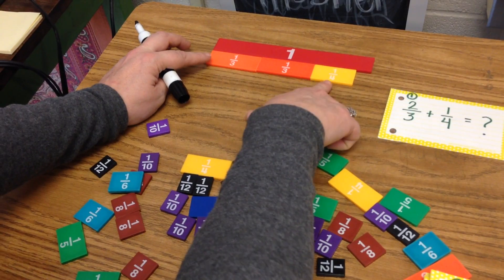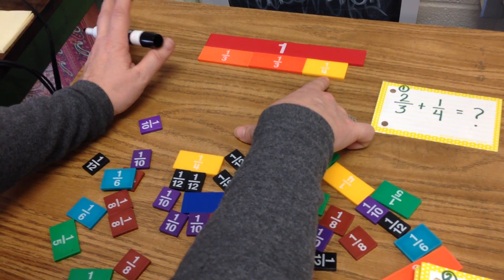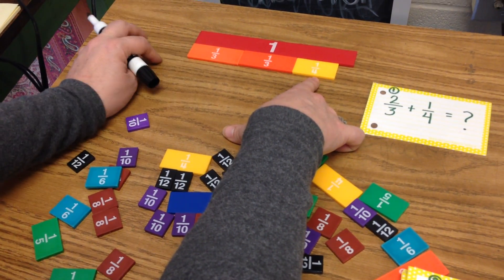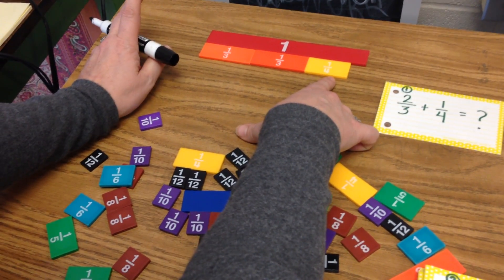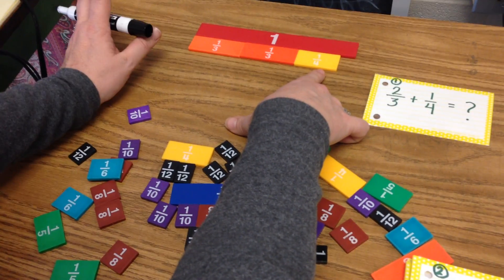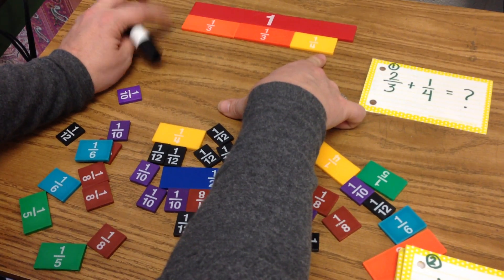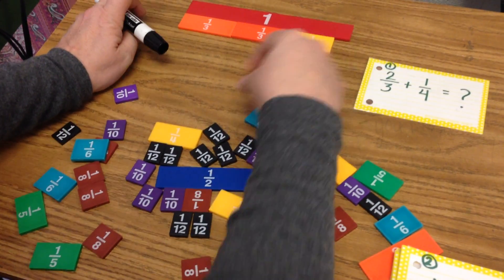So I will say, will three go into four evenly? No. Next multiple of four is eight. Does three go into eight evenly? Also no. Next multiple of four would be twelve. Will three go into twelve evenly? Yes.